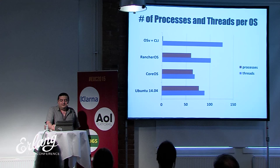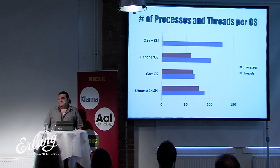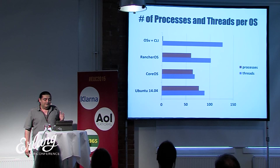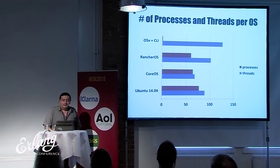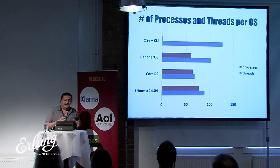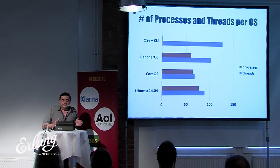I did a little experiment: I launched several operating systems in a Vagrant box, fresh without any application installed, and measured how many processes and threads they use out of the box — at least 60 to 90 processes and many more threads, before any user application runs. OSV has an optional command-line interface mostly used for debugging. By definition, OSV has only a single process — your application — and 127 threads.